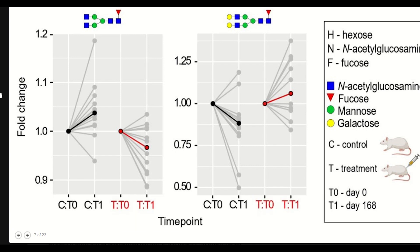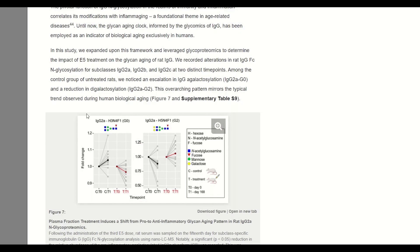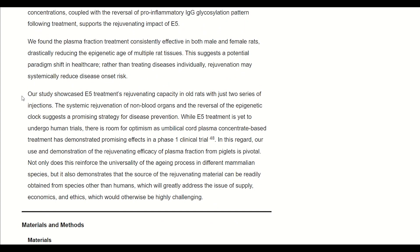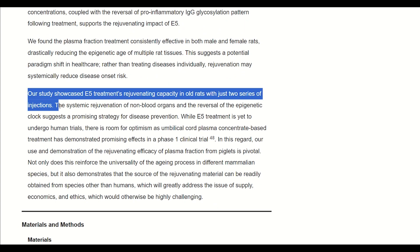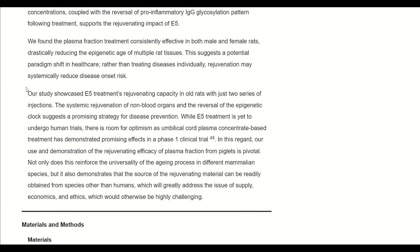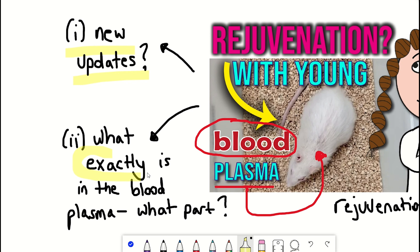Anyway, what these preliminary data suggest is that there is some sort of effect happening with E5 in terms of the older treated rats having similar biomarkers to the younger rats, which raises the question as what exactly is E5, and how could it potentially be having these effects in the first place?